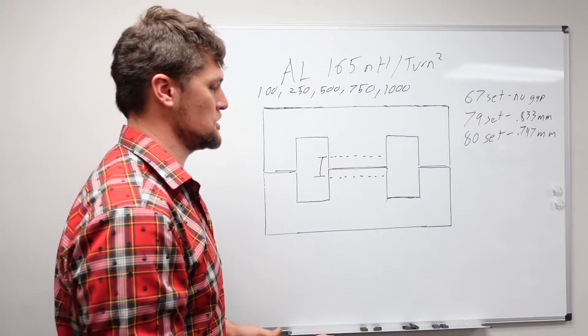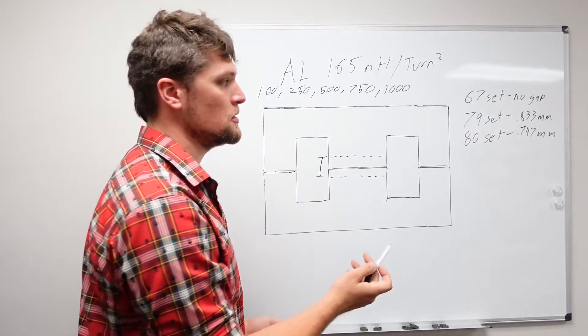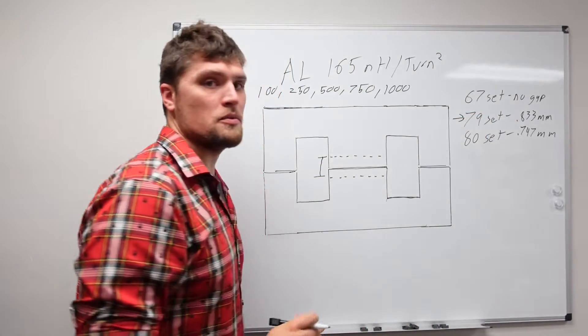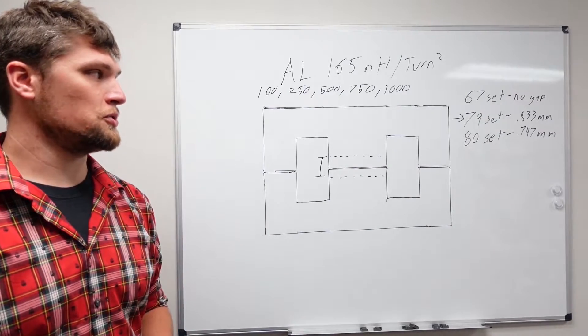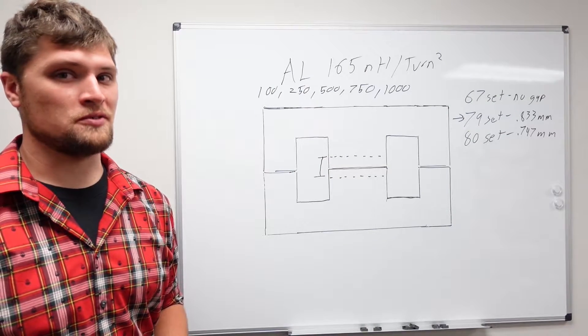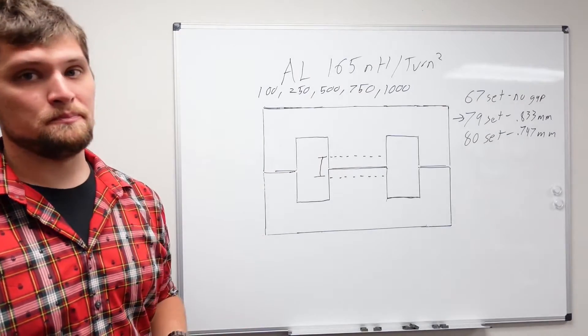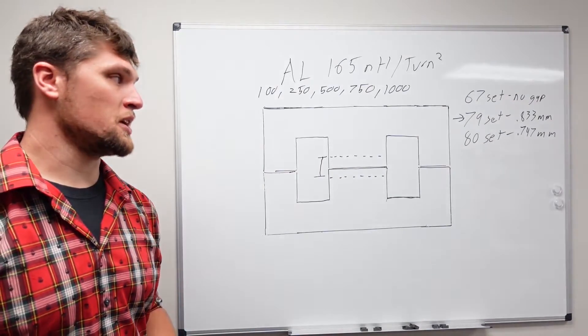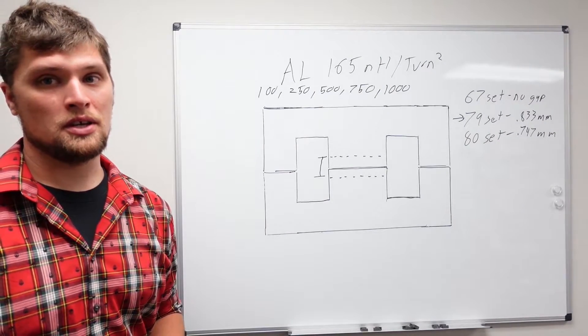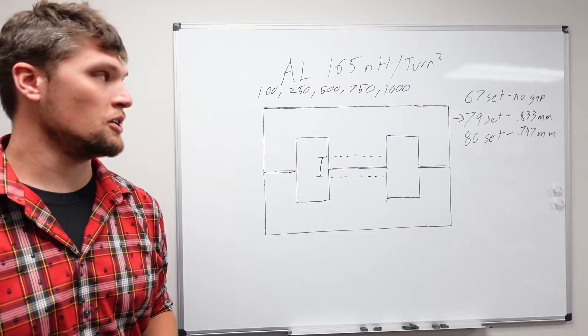What we would expect to see in this low hundreds of kilohertz range, we would expect to see 79 material be the least lossy of these three materials. And at the higher end of that range, we would expect that to kind of shift to 80 material being the more optimal material. But that is also on solid cores that we would expect that and not gapped cores. So let's take a look and see how they perform with the gaps cut in them at the same AL value.